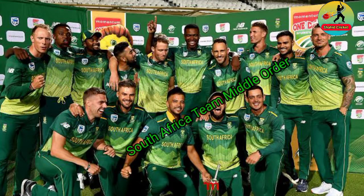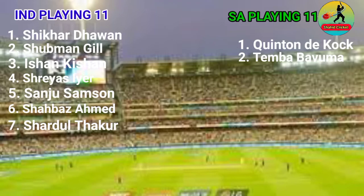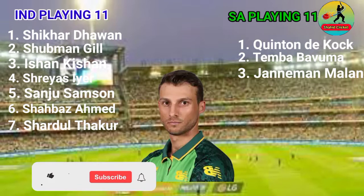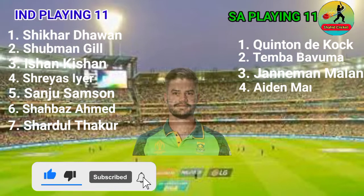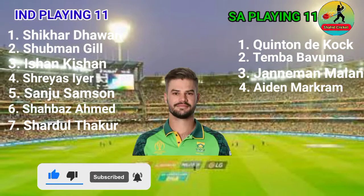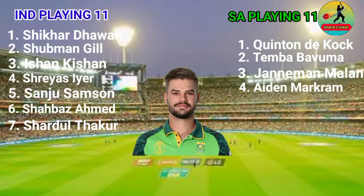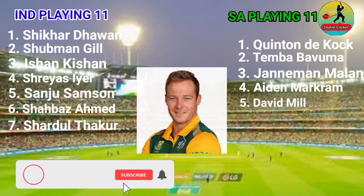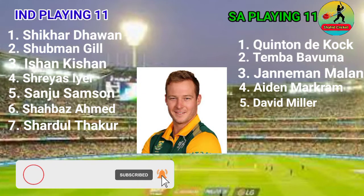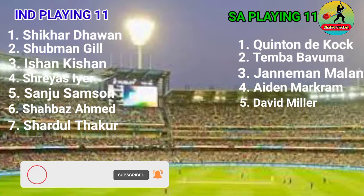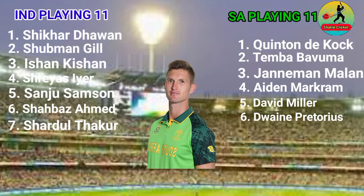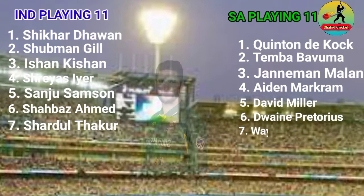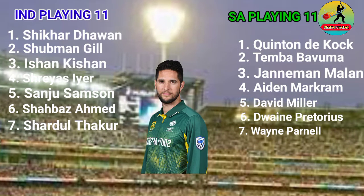South Africa Team Middle Order. No. 3, Janneman Malan. No. 4, Shreyas Iyer, Right Hand Batsman. No. 5, David Miller, Left Hand Batsman. No. 6, Dwaine Pretorius, All Rounder. No. 7, Wayne Parnell, All Rounder.